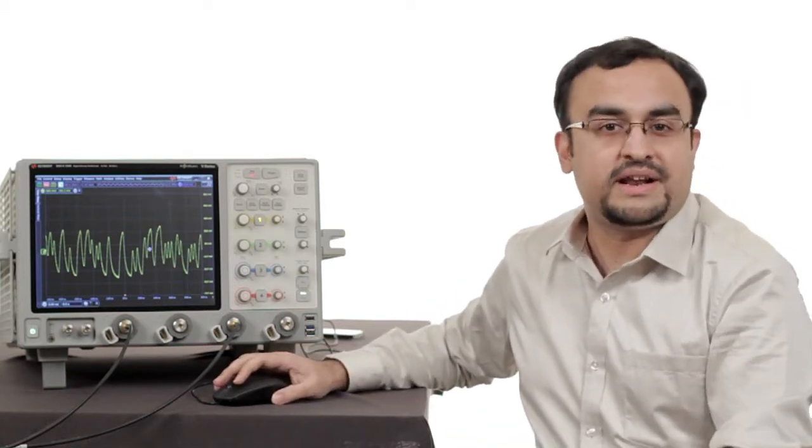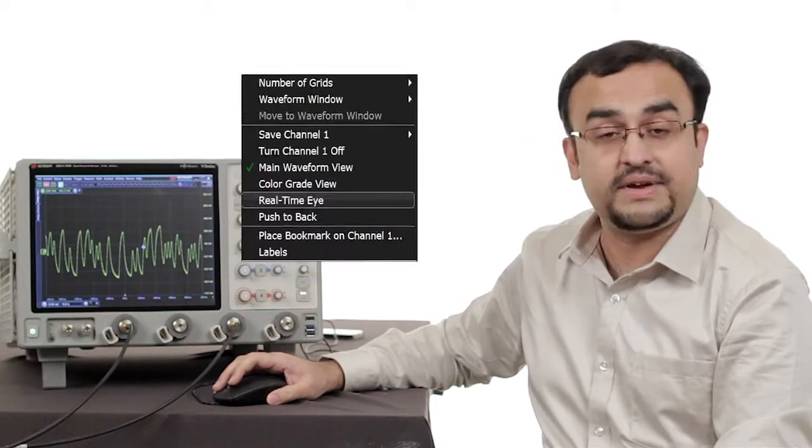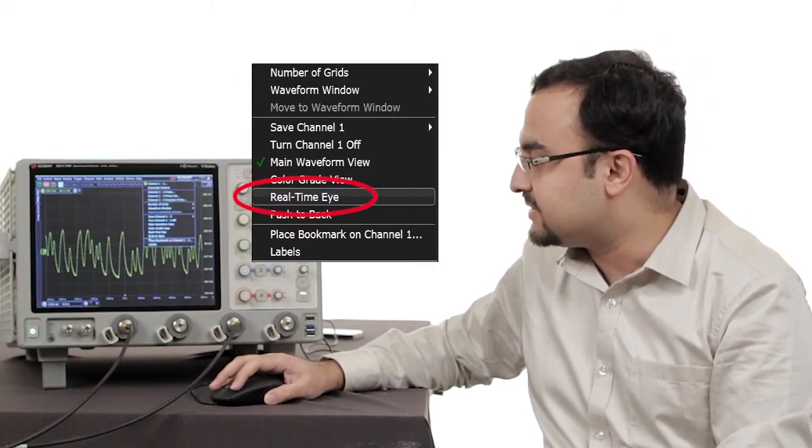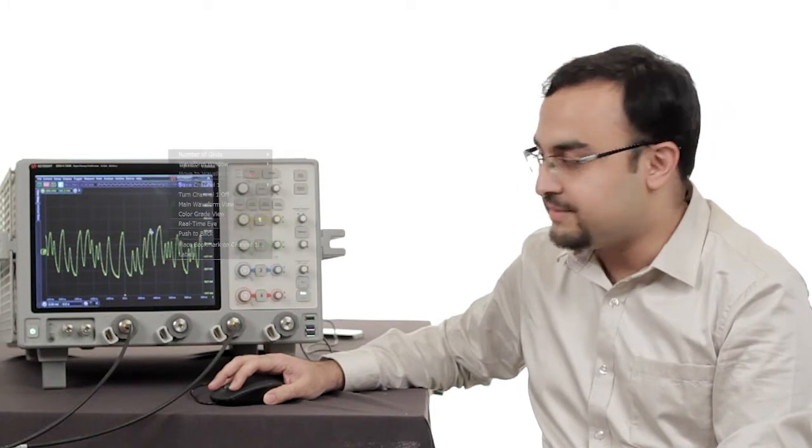So what if I try plotting an eye of this signal? I can use the Infinium's one-click eye and try to plot an eye of this signal. So I go and plot the real-time eye and as you can see I'm not able to get that eye.